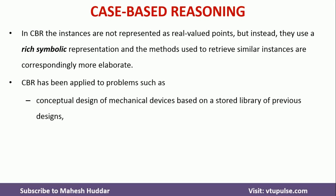Let us say that we are trying to design a mechanical device. In this CBR method, we store previous designs in the form of a library. Whenever we want to design a new mechanical device, we go through those previous designs and try to match them with the new requirement. If any previous design matches the new requirement, we consider that design and present it to the customer. If the customer is happy, that is the final one. Otherwise, we do some modification and then present it to the customer.